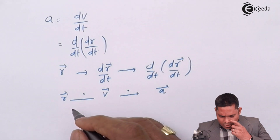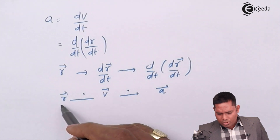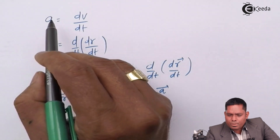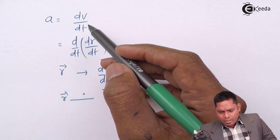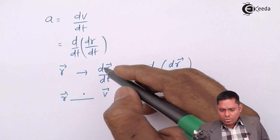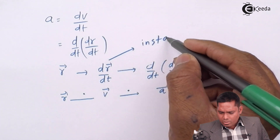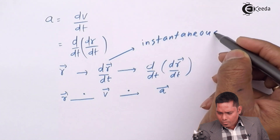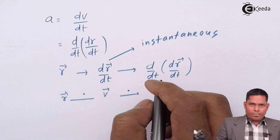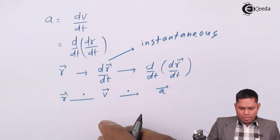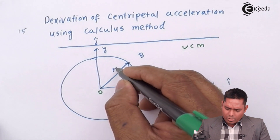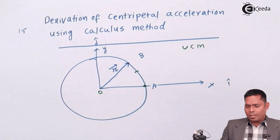The first important step is to find the expression for the radius vector at any instant, because this gives us instantaneous velocity and instantaneous acceleration. At any instant of time, when the particle is at point B, the radius vector is r.